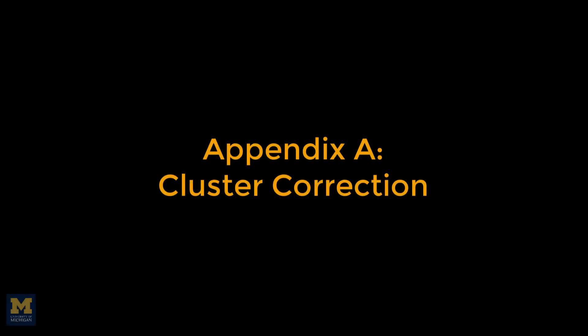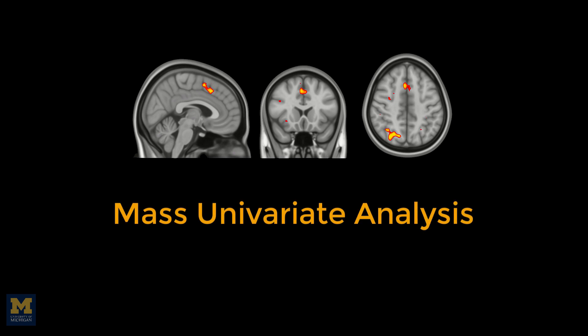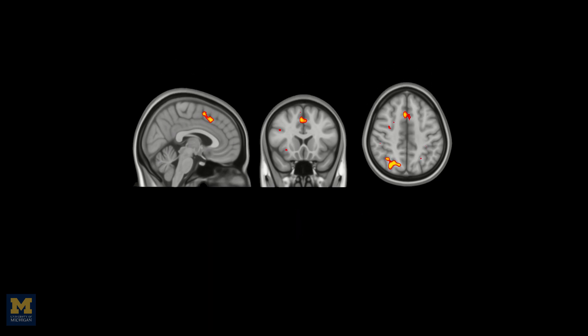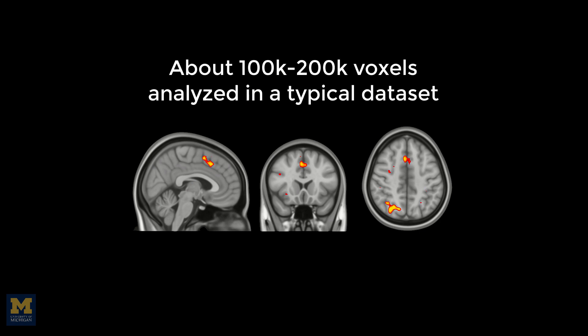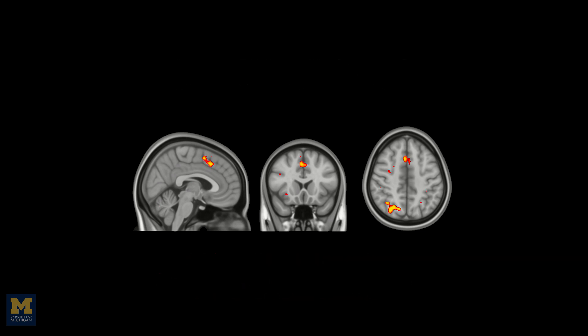In the fMRI tutorial you just completed, you learned that group level contrast maps are created through something called a mass univariate analysis. In other words, we carry out as many statistical tests as there are voxels. Given that a typical fMRI dataset contains tens of thousands of voxels, this can quickly lead to an unacceptably large number of false positives.